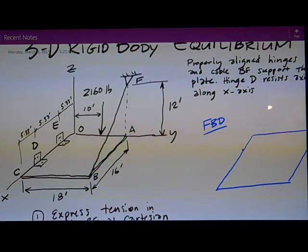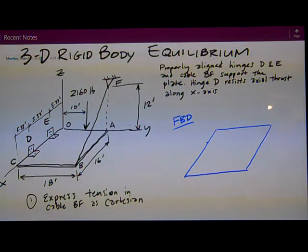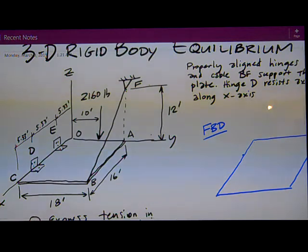The plate is supported by a cable BF. The hinge D is noted as resisting axial thrust along the X-axis, which implies that hinge E does not. So we'll reflect that in the free body diagram here in a minute. What we ultimately want to find out is the tension in that cable. It's acted on by one force, 2160 pounds over here, 10 feet out from the origin.